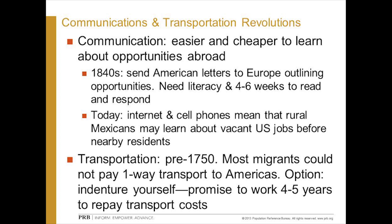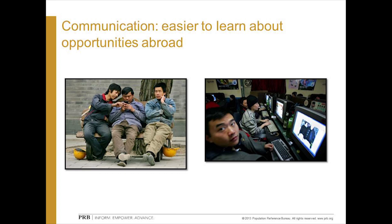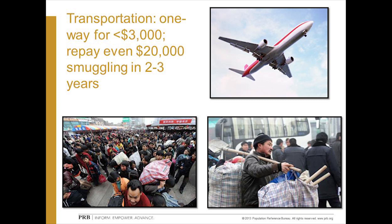Transportation is the second factor — it's much cheaper and easier to travel now than ever before. Back in the 1700s, most migrants could not pay one-way transport from, say, the United Kingdom to what became the U.S. Many people indentured themselves, promising to work four or five years for whoever met the ship's captain and paid the fare. So communications makes it easier to learn about opportunities, and transportation is far cheaper than it used to be.